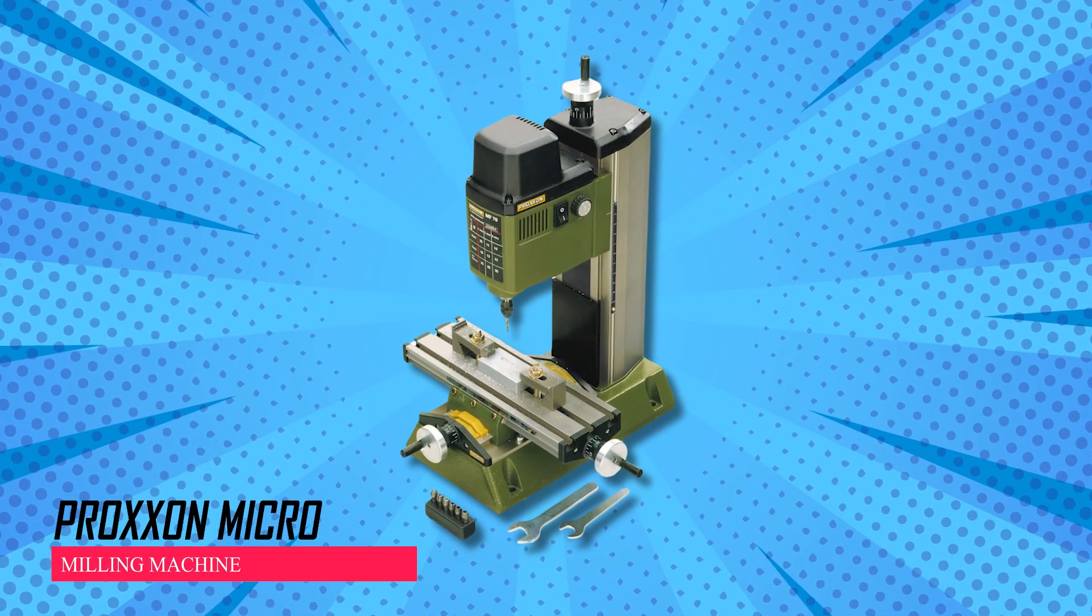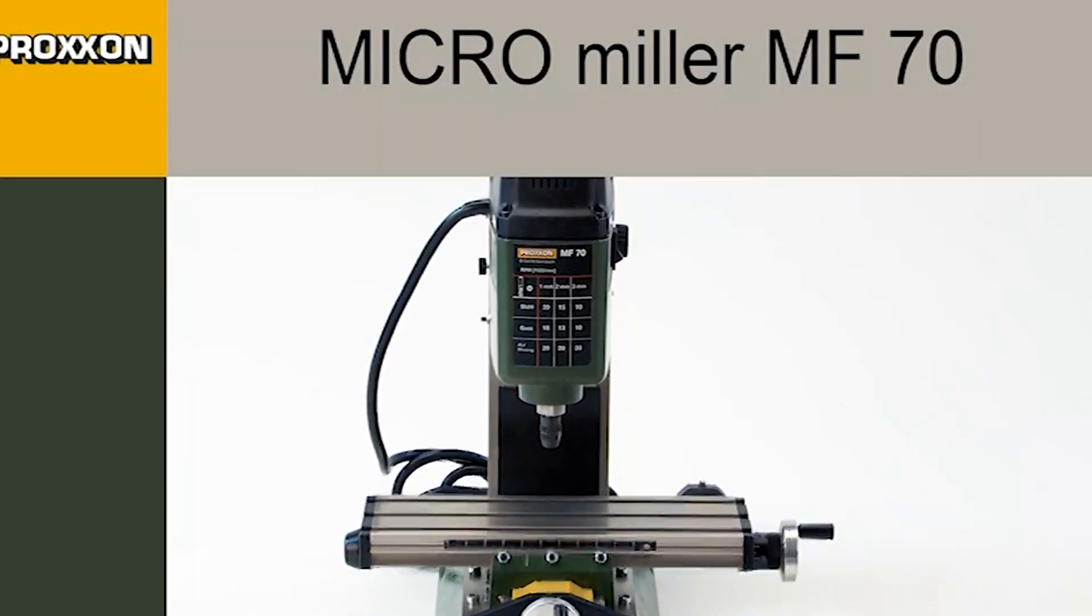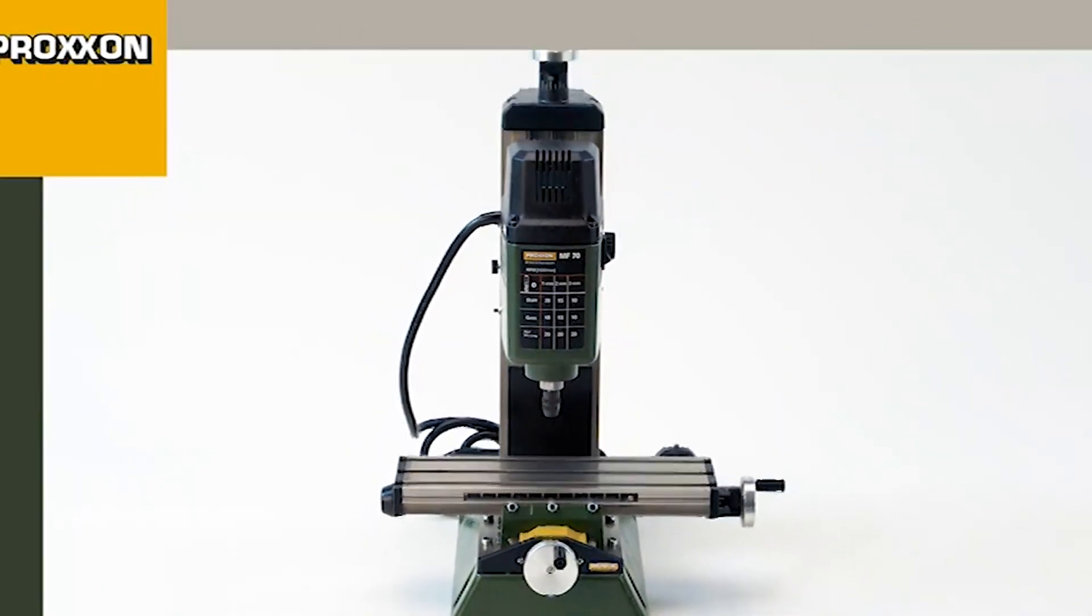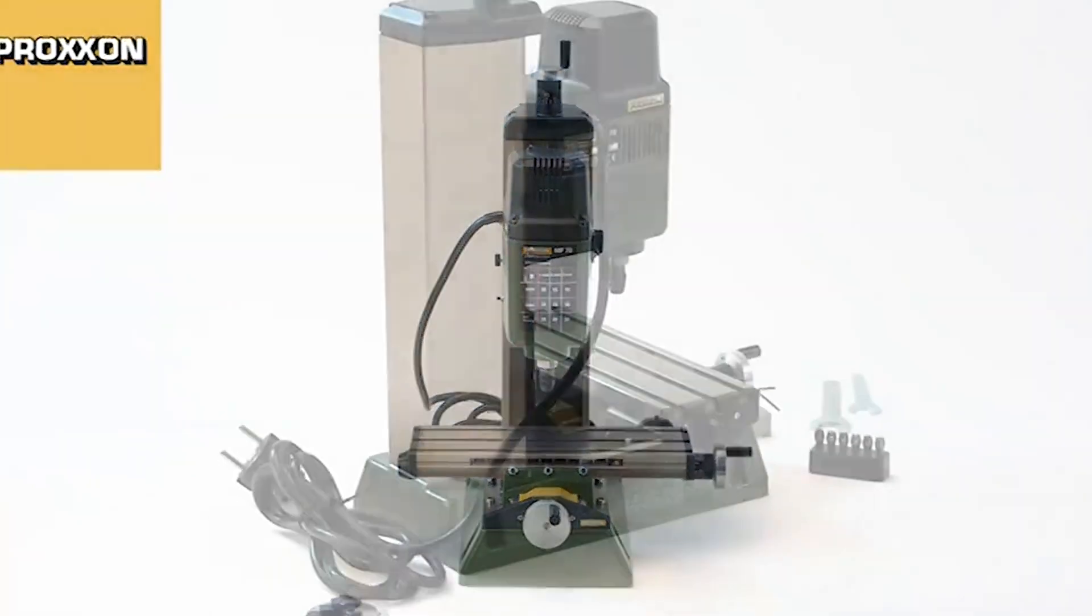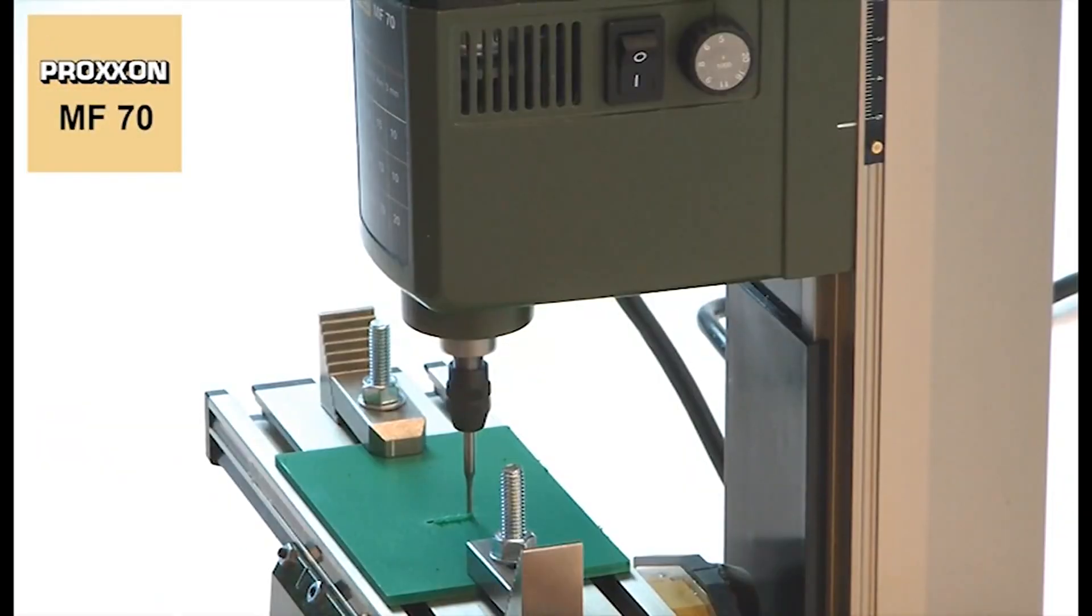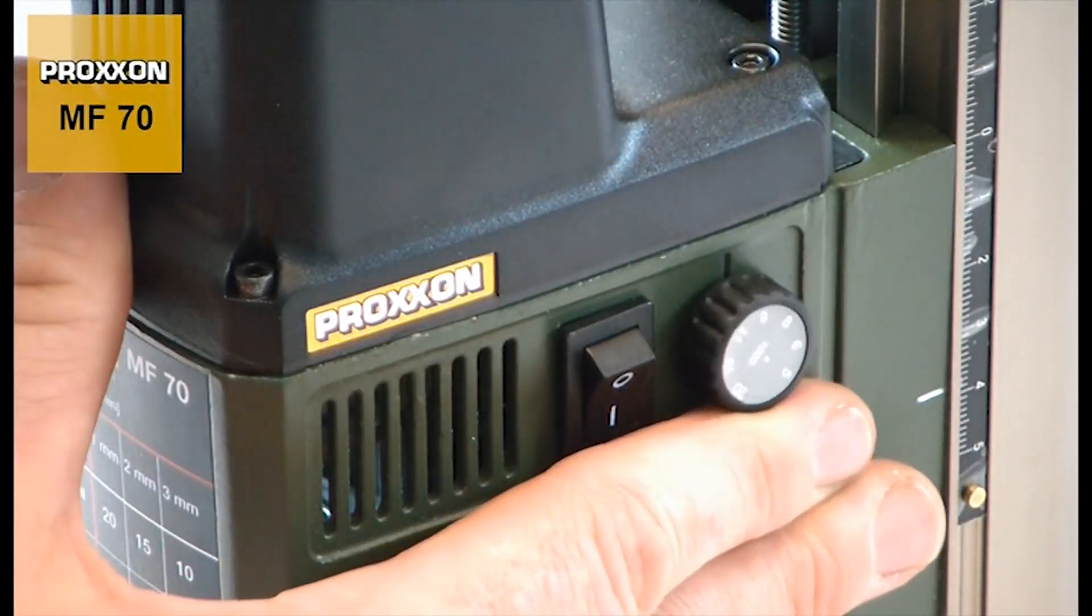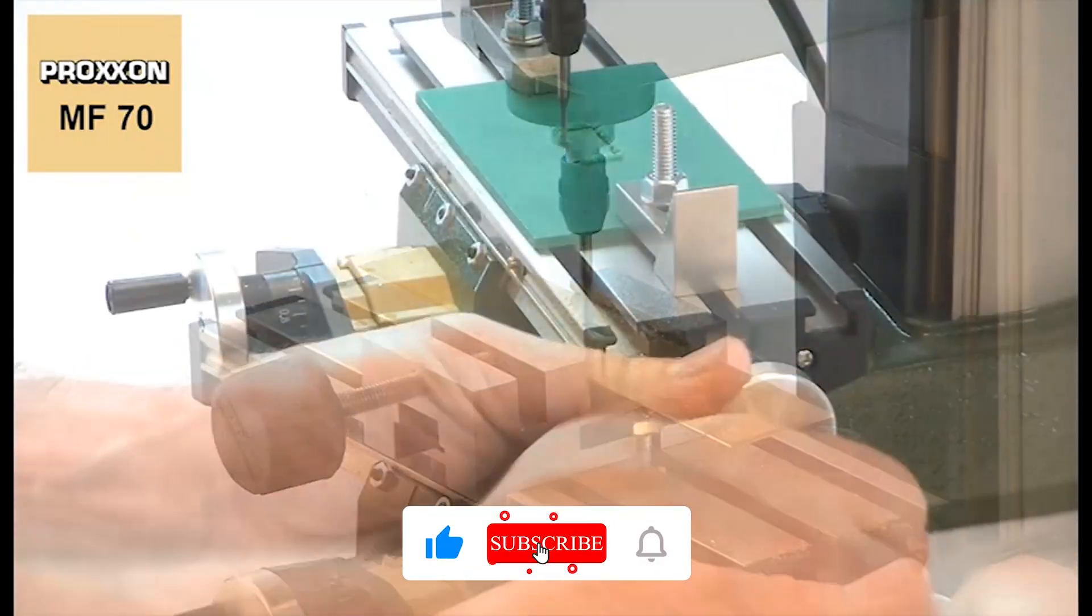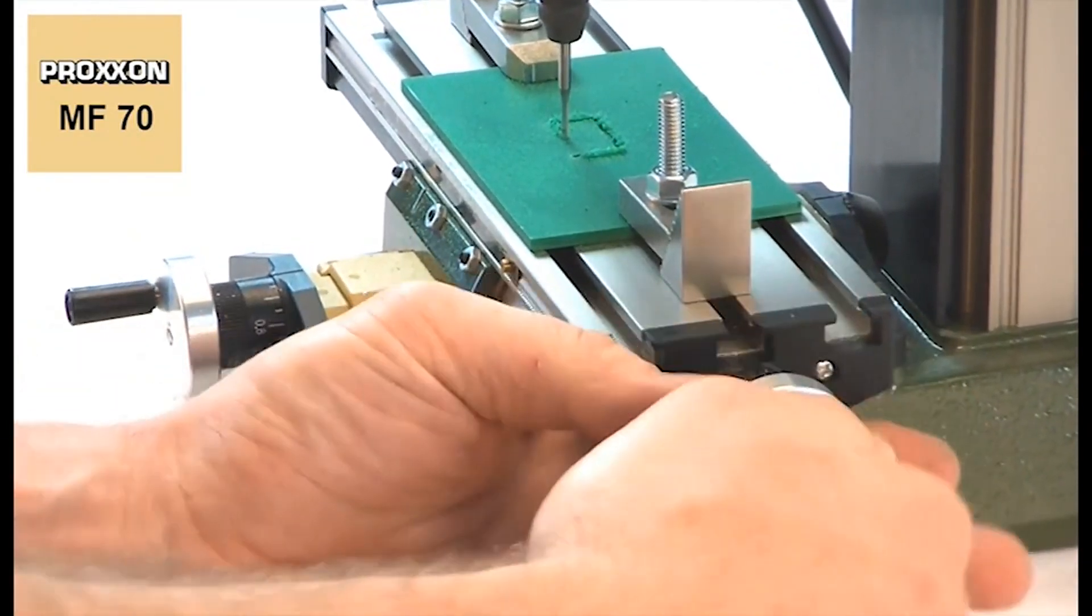Proxxon Micro Milling Machine. The machine features a variable speed range from 5,000 to 20,000 RPM, powered by a 1/8 HP 100-watt motor, operating on 110 to 120-volt AC 60-hertz power supply. Its table measures 7-7/8 inches by 2-3/4 inches (200 by 70mm).